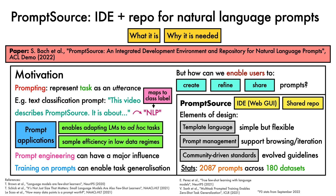As of September 2022, PromptSource includes more than 2000 prompts across 180 datasets. This collection, all of which has been reviewed for quality control, is referred to as the Public Pool of Prompts, or P3, and has already seen usage in other NLP projects.